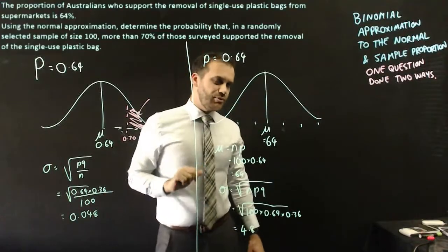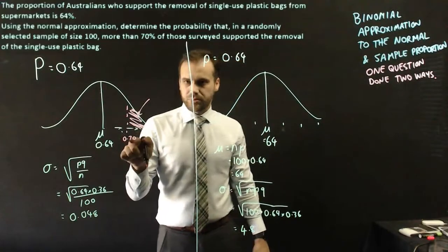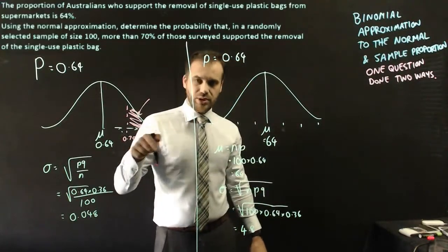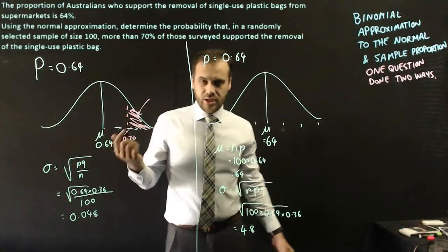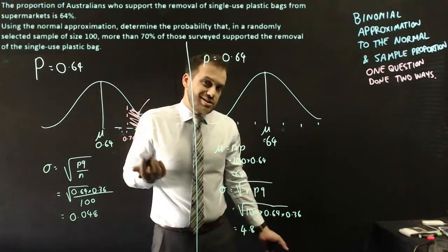In this one, it's just slightly more complicated, because we need to know what that percentage is. We need to know what 70% of 100 is. We can do that, because I'm using a simple number, it's easy. We know that it's 70.